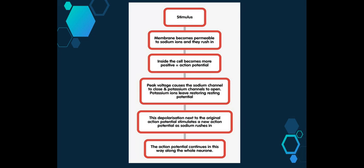So in your booklet there is an arranging the steps activity and you can use this part of the video to help you to complete that. So we start off with a stimulus. The membrane becomes permeable to sodium ions and they rush in. Inside the cell becomes more positive which begins to create an action potential, and if we have a big enough change in voltage we will then have the following take place. So the peak voltage causes the sodium channel to close and the potassium channel to open. So that goes back to the other image where we had to look at the different colored circles and whether they move in or out. So potassium ions then leave the cell restoring the resting potential.